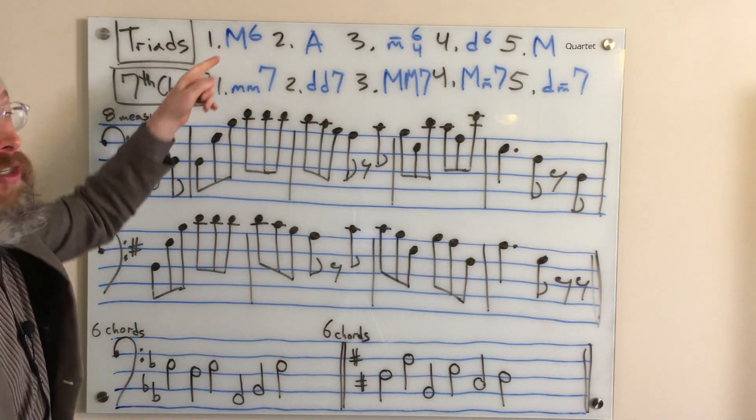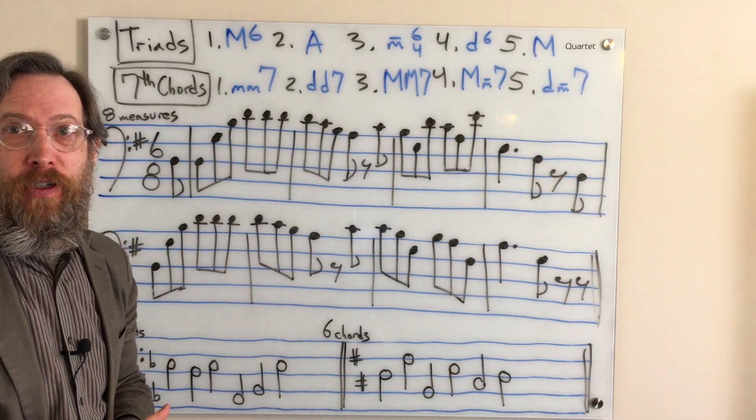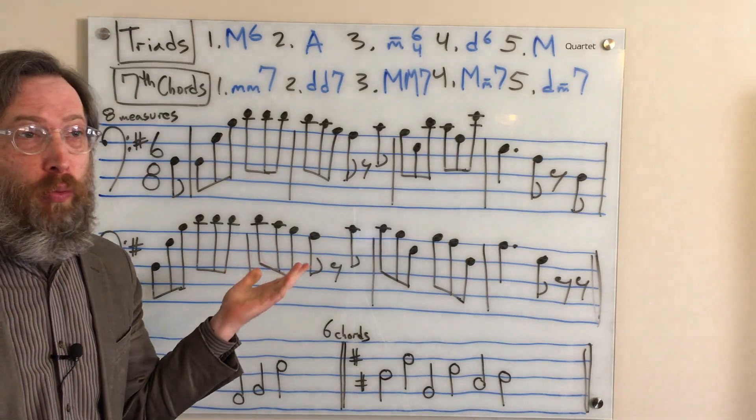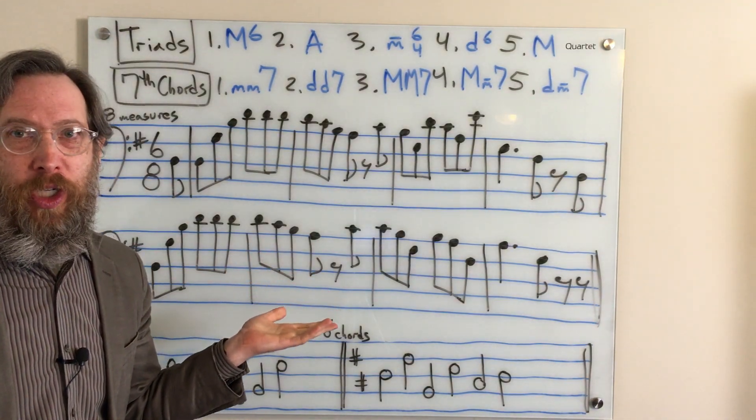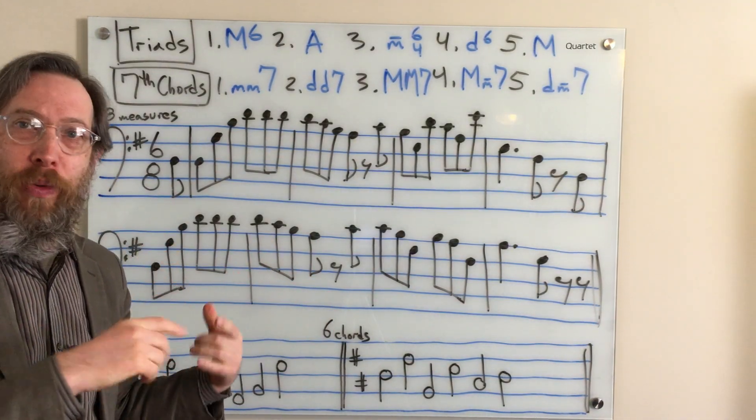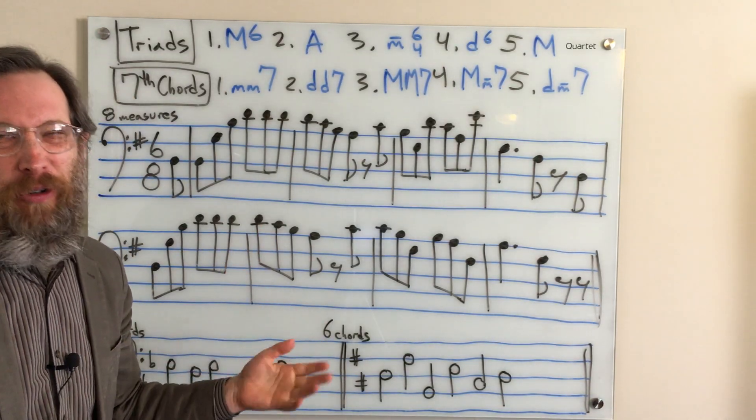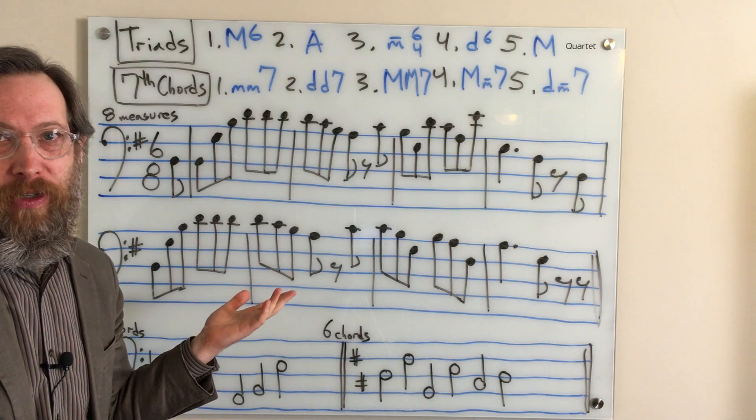For the triads, our first one was a major triad in first inversion. Number two was an augmented triad. We almost always call them just root positions because they're just major thirds. Without a context, you can't tell if it's in an inversion. So in general, you almost always just see augmented triad as root position.